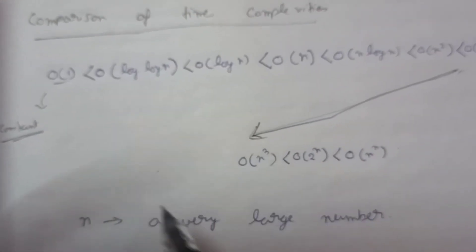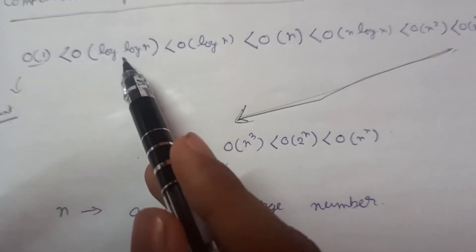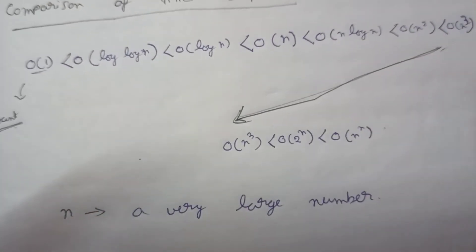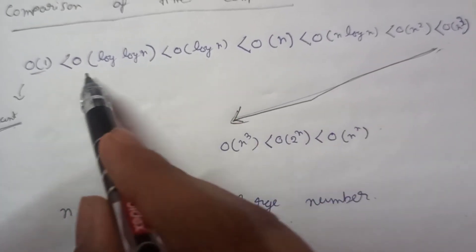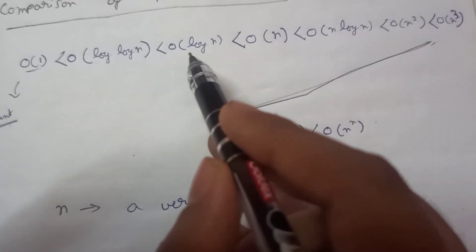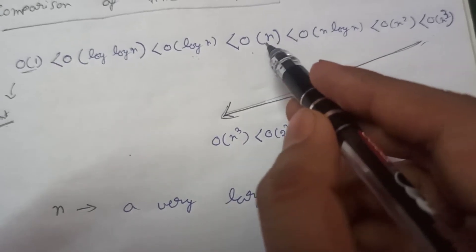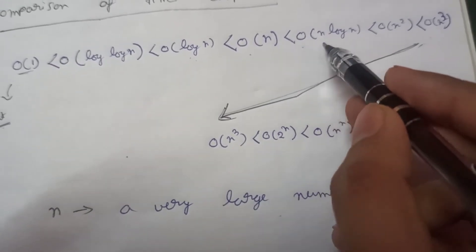These are all we are getting from lower to higher order time complexities. You must remember this order. Then there is order of log n, then order of n - this is linear time complexity - and then order of n log n.